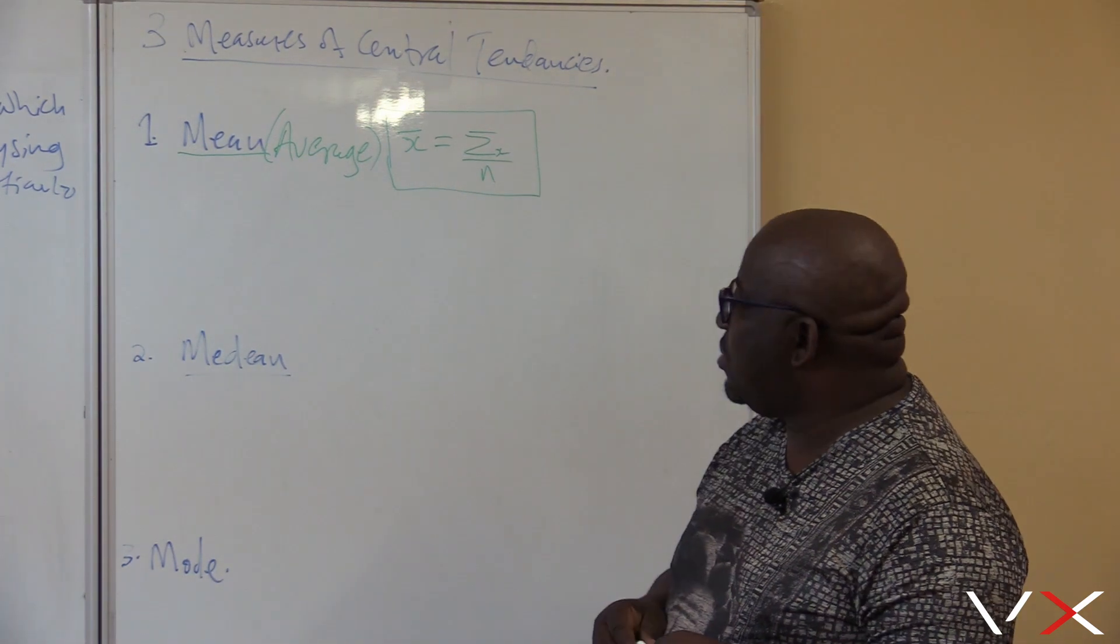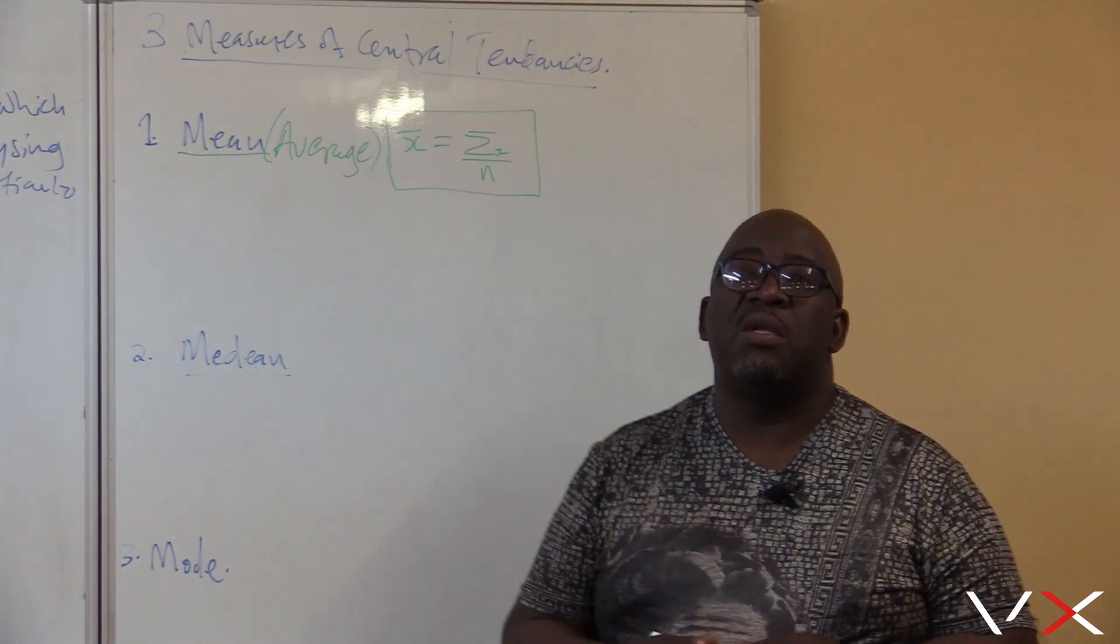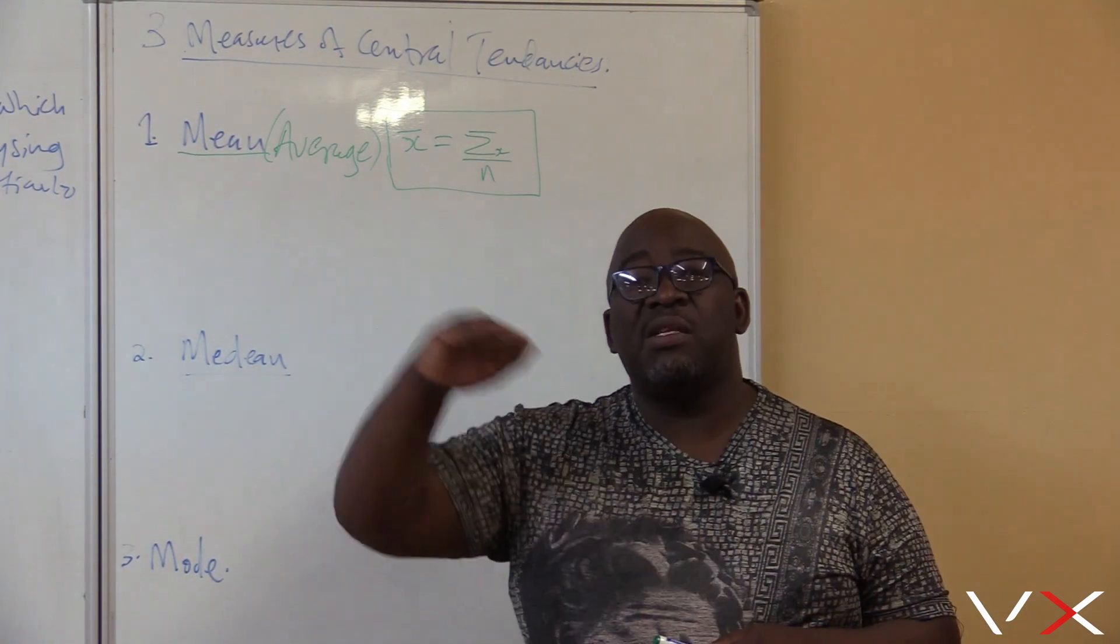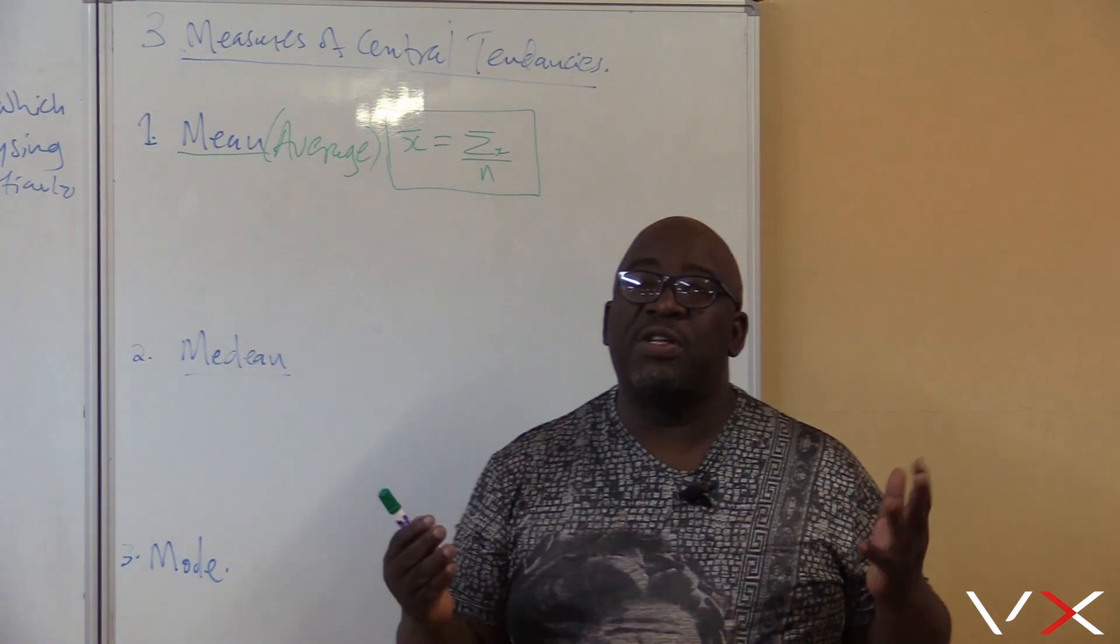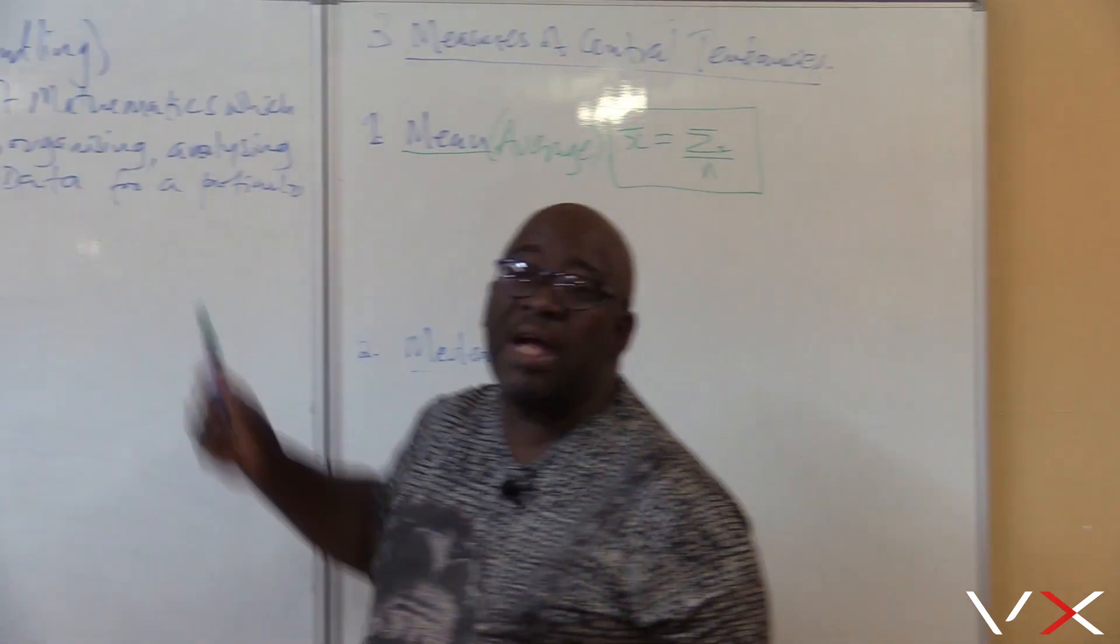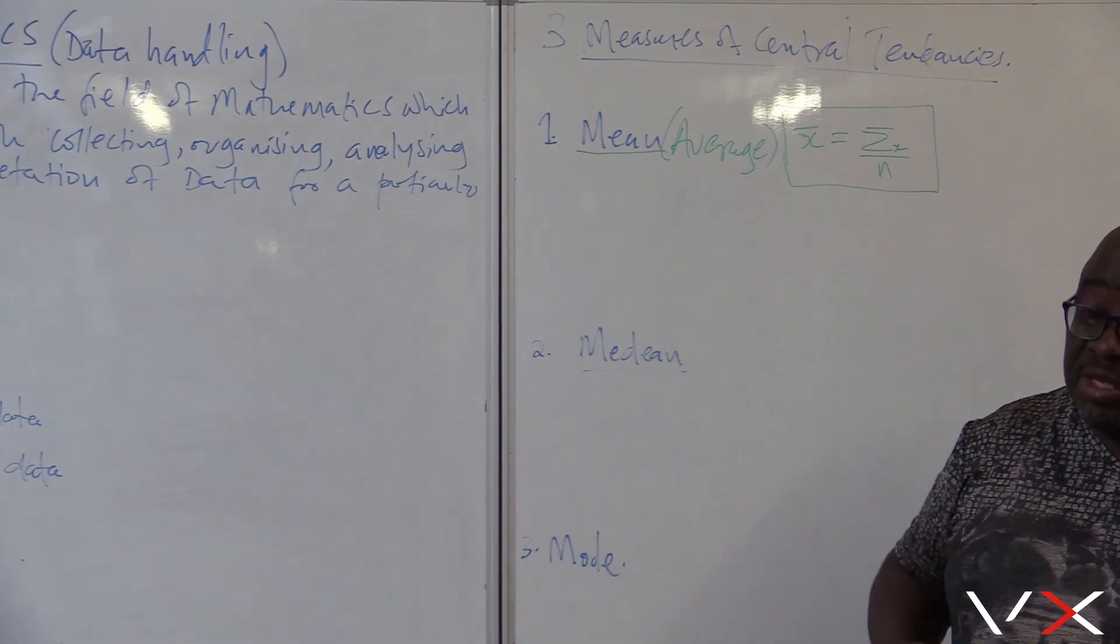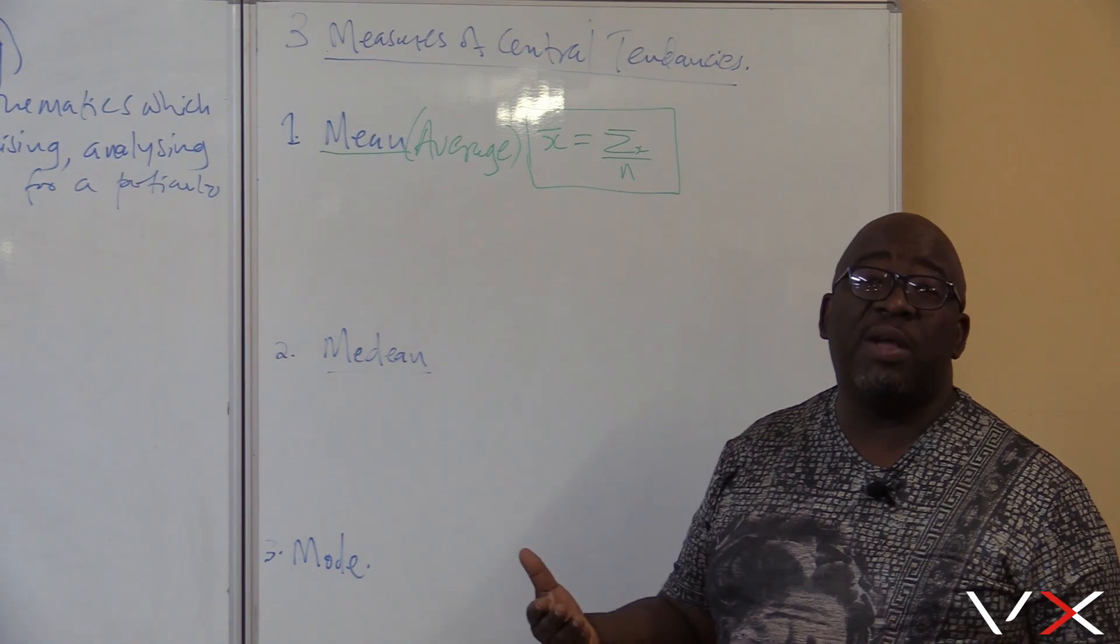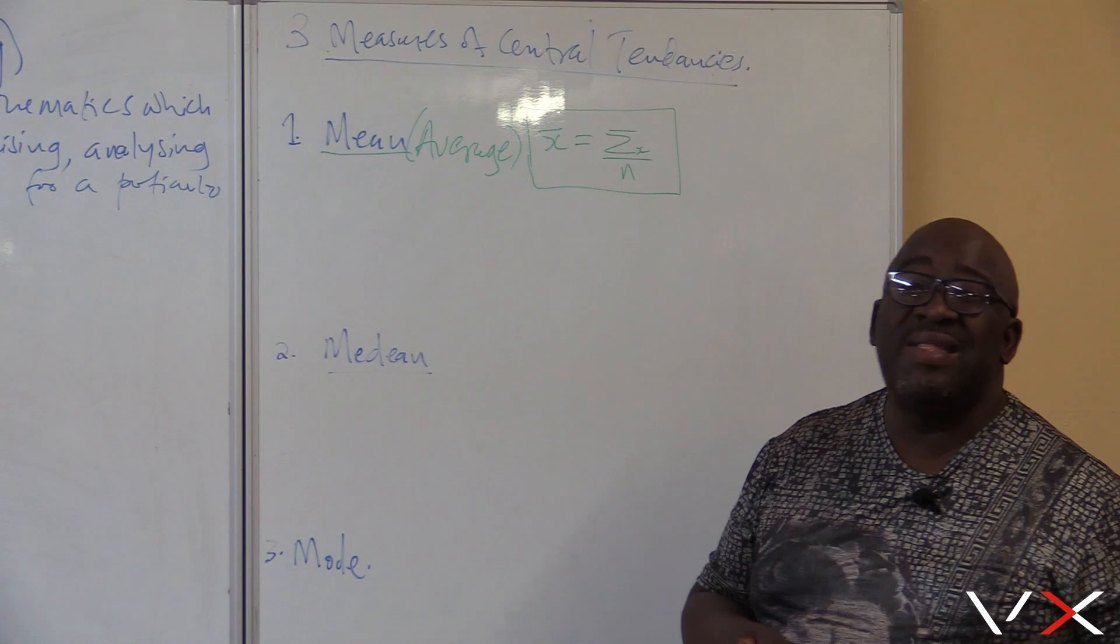Number two, the second measure of central tendency is median. What is median? Median is the middlemost observation after the data has been arranged in an ascending or descending order. You can't find a median if you have not arranged the data. In other words, if you have not organized your data. That's one of the things that we do in statistics, we organize our data. So for me to find a median, I must organize my data either in an ascending or descending order.